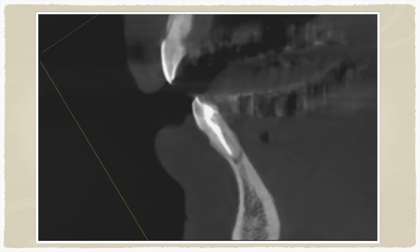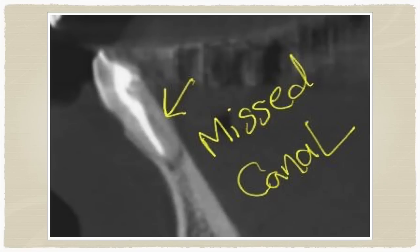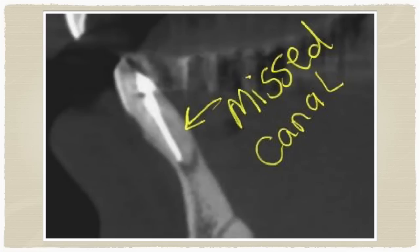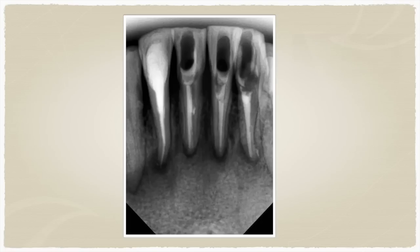A CBCT was taken to help make the diagnosis. CBCTs are very helpful in cases where you're trying to triage a retreatment or apical surgery. On a sagittal section, you can see that the root canal has been filled to the end and there is some periapical infection. But at higher magnification, you can see a missed lingual canal in the central incisor, and this is also present in the lateral incisor. These root canals appear filled on a straight facial periapical radiograph, but the CBCT sagittal section reveals this missed canal and diagnoses the source of the problem.